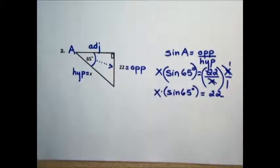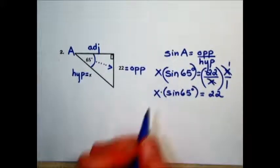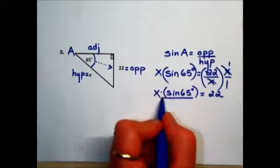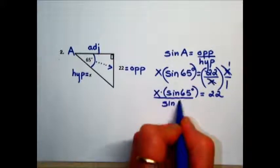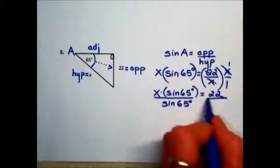And last, to solve for x, we will divide both sides by the sine of 65, maintaining equality.